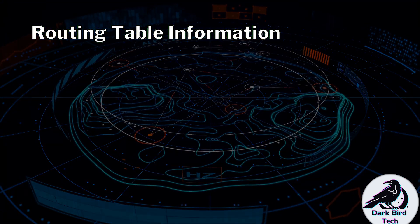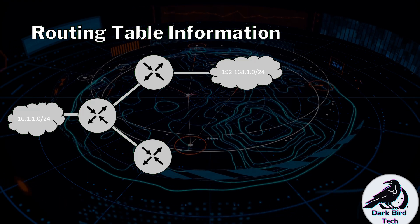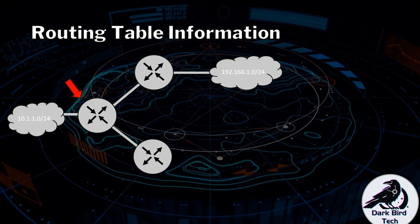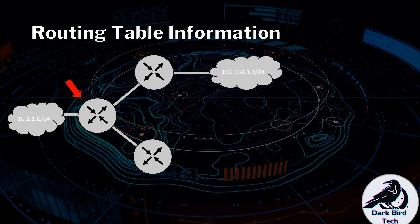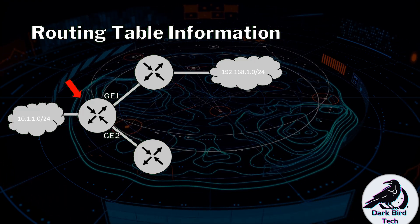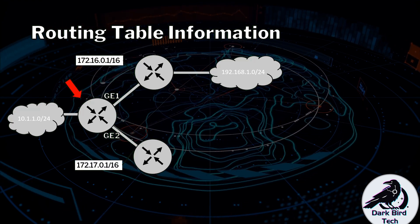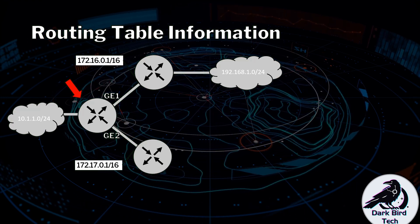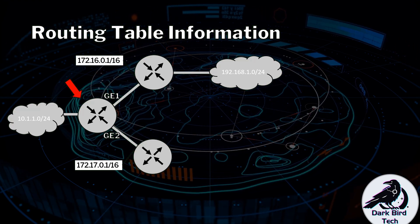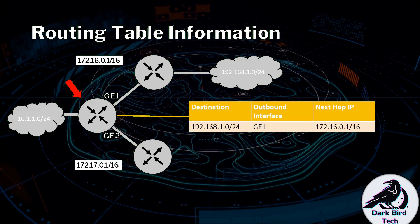Let's have a look at this in action. We're going to have a network of 10.1.1.0/24 and a network of 192.168.1.0/24. We're going to look at what that router would need to know to be able to plot a route to that 192.168.1.0 network. It's going to need to keep track of its interfaces — let's call them Gigabit Ethernet 1 and Gigabit Ethernet 2. Then it needs to keep track of next hop information.